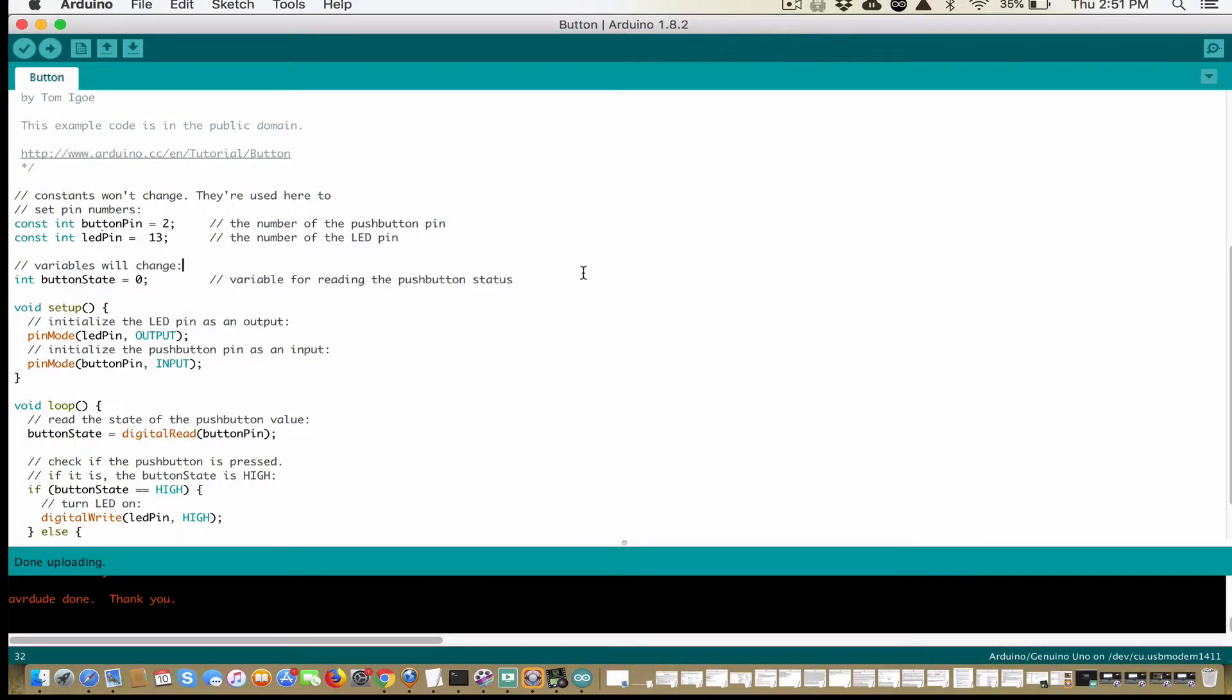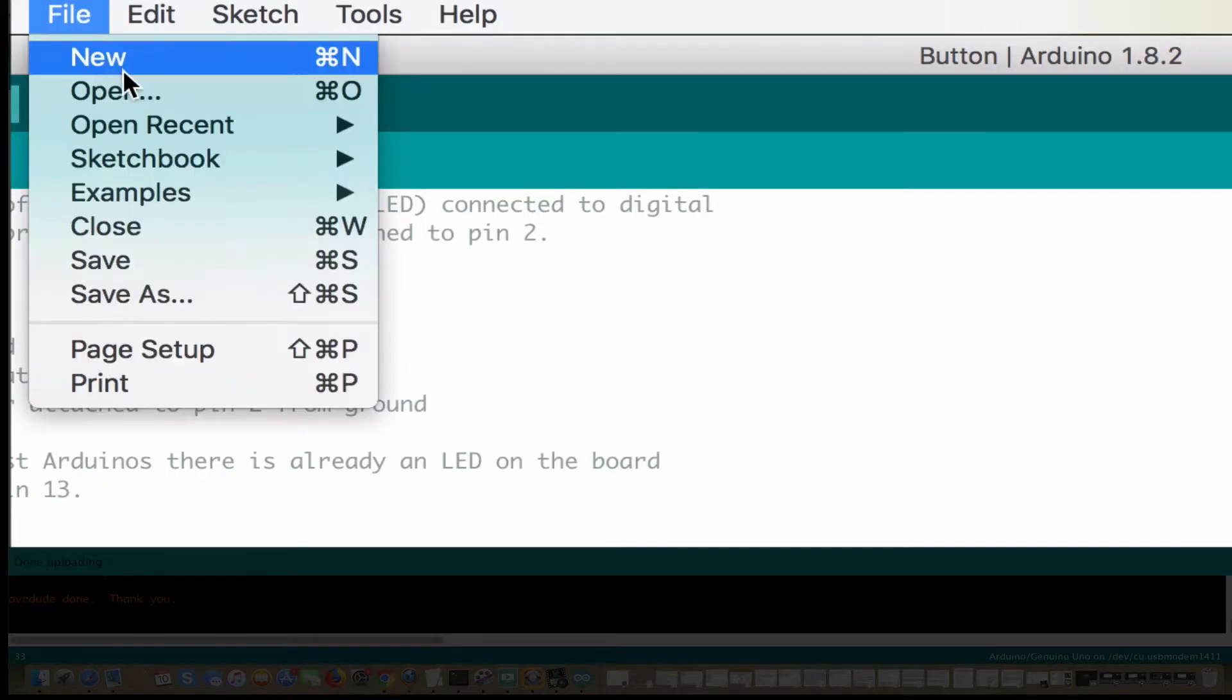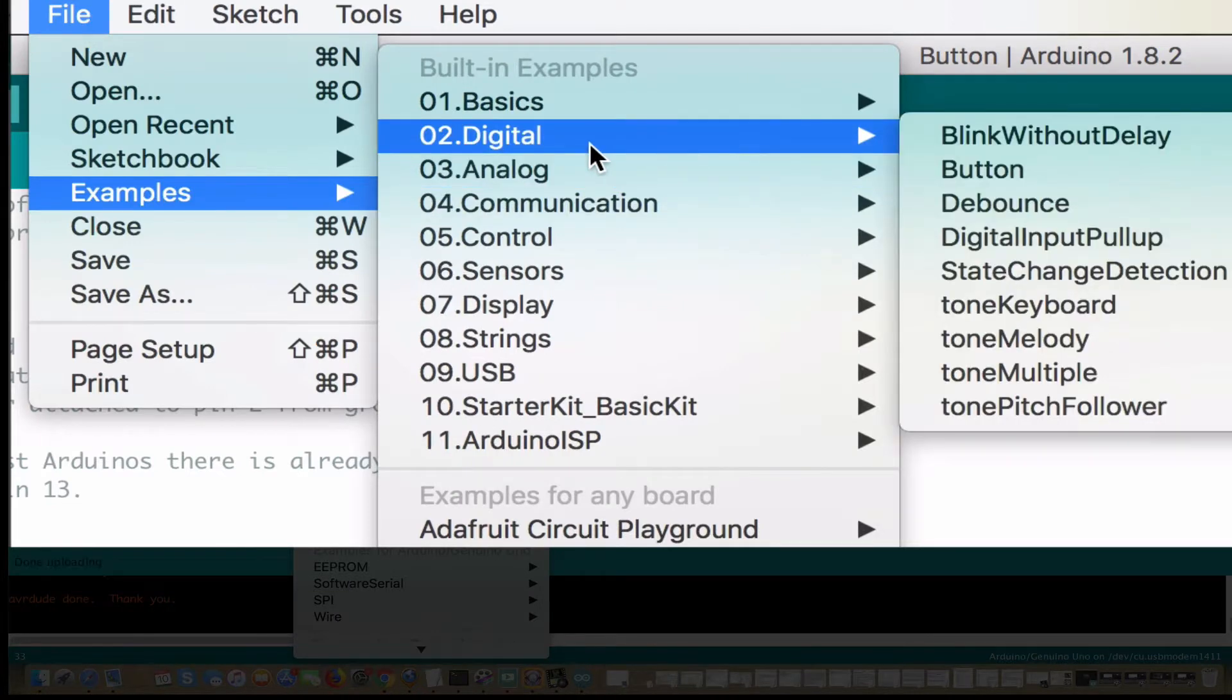We take a look at the code. This is the button code. It is under file, examples, digital, button. So go ahead and click that and you'll come here.